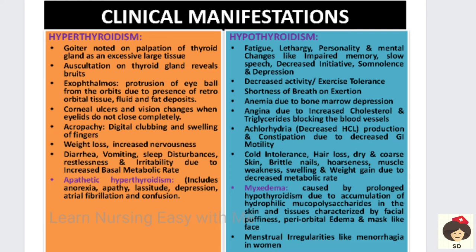In hyperthyroidism there is weight loss, and in hypothyroidism there is weight gain due to fat accumulation. Myxedema is a condition that occurs in adults — hypothyroidism in adults is called myxedema. There will be accumulation of mucopolysaccharides in the skin and tissues, causing puffiness, periorbital edema, and a mask-like face. Patients with hypothyroidism will also have menstrual irregularities — specifically menorrhagia, which is excess bleeding during the menstrual cycle.